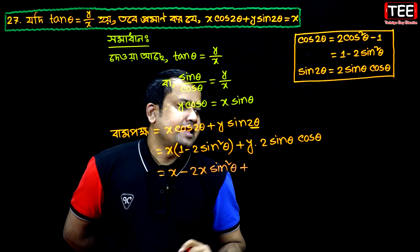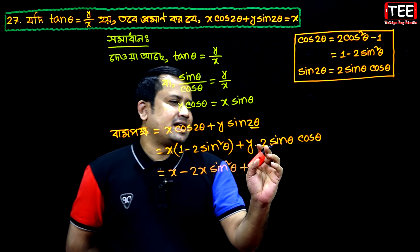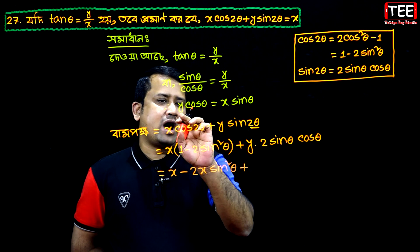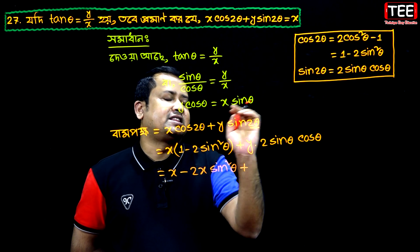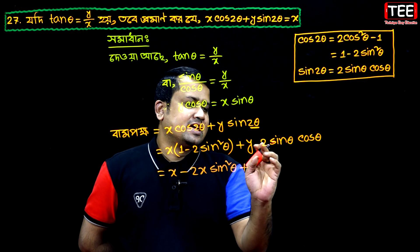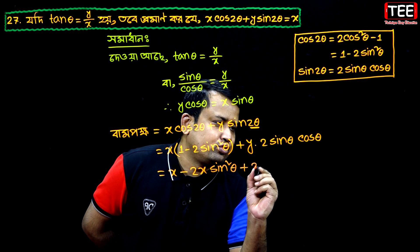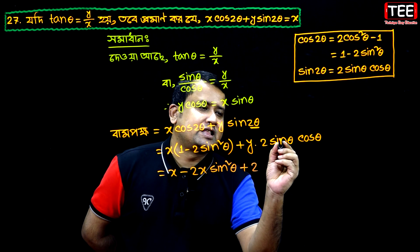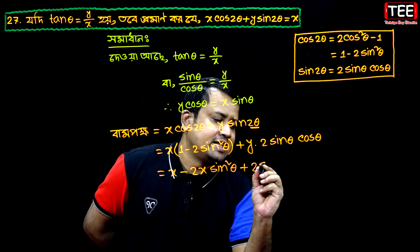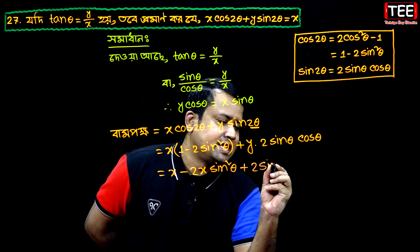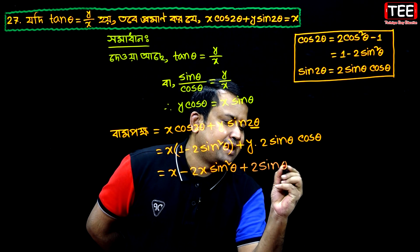It will give the brackets to θ. Then, 2x sinθ cosθ. Then, 2x sinθ cosθ.